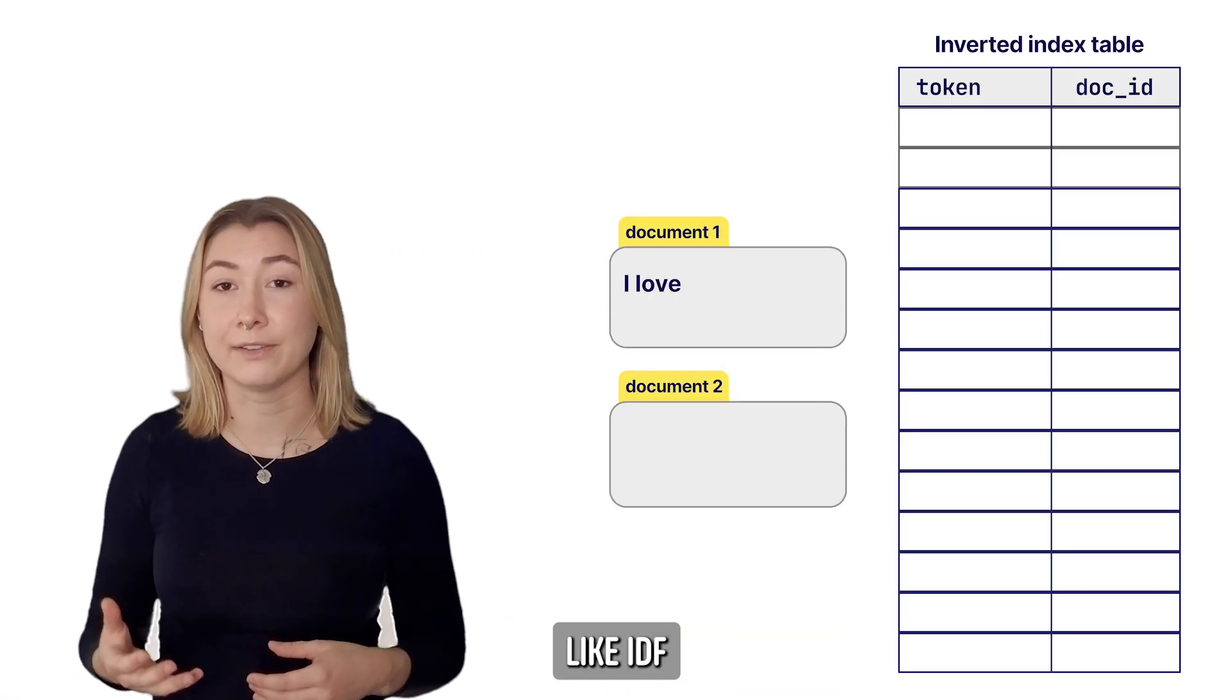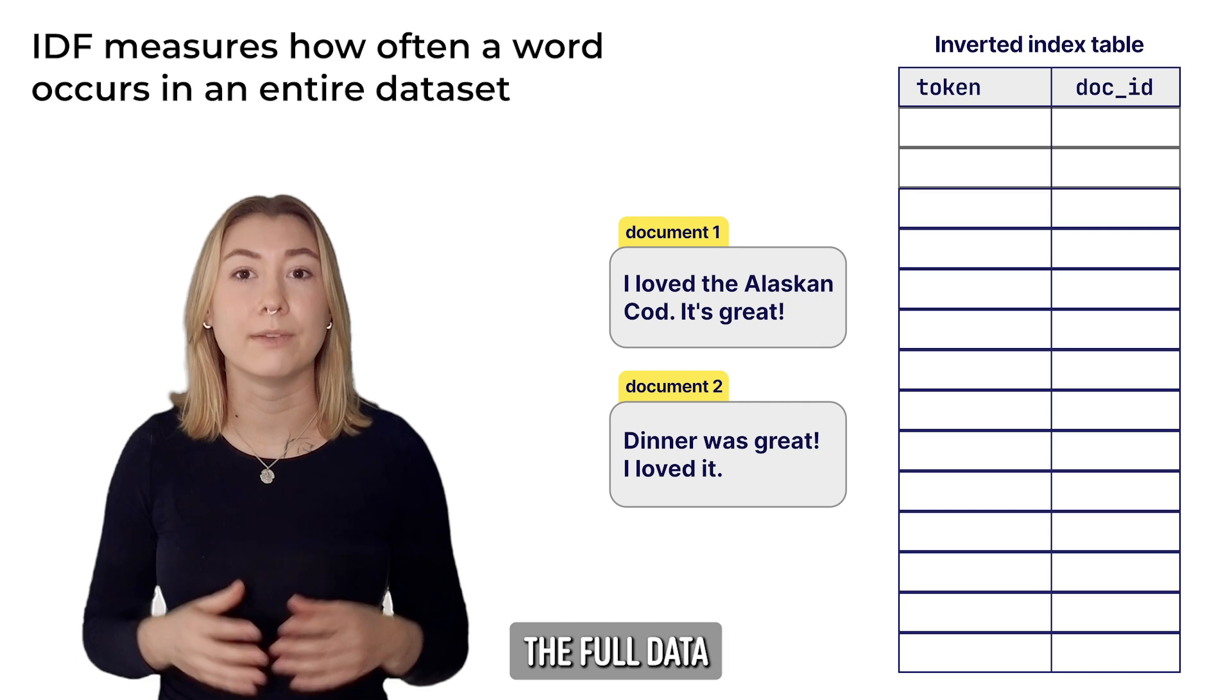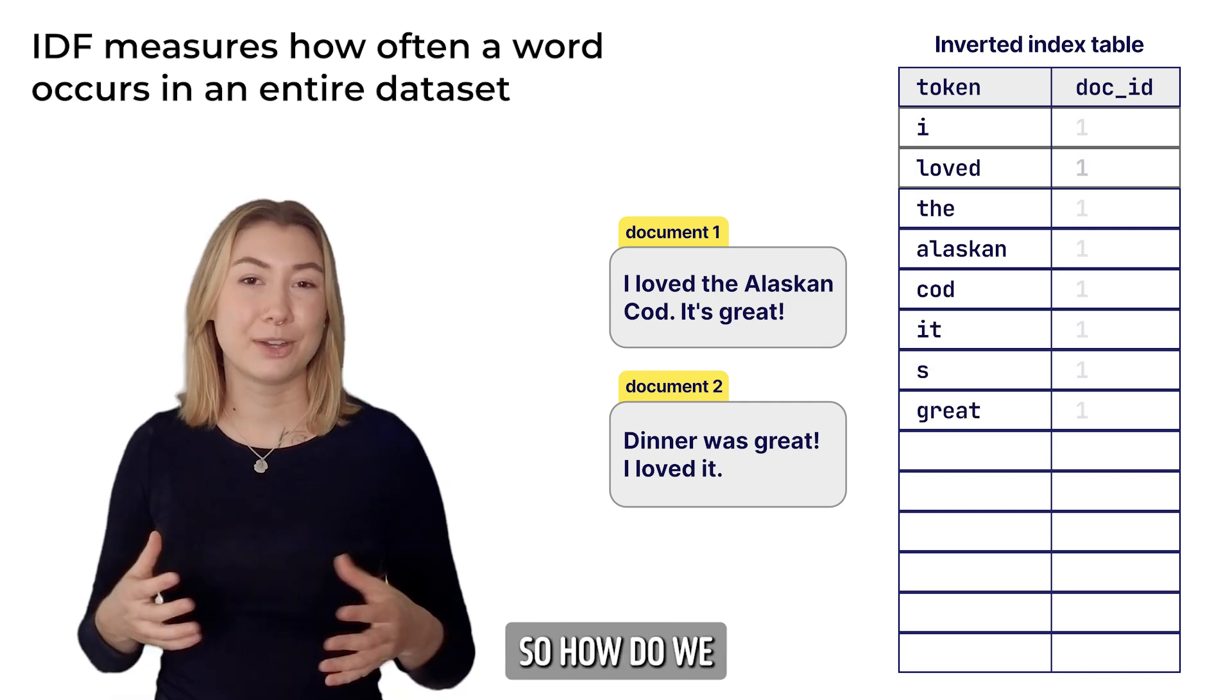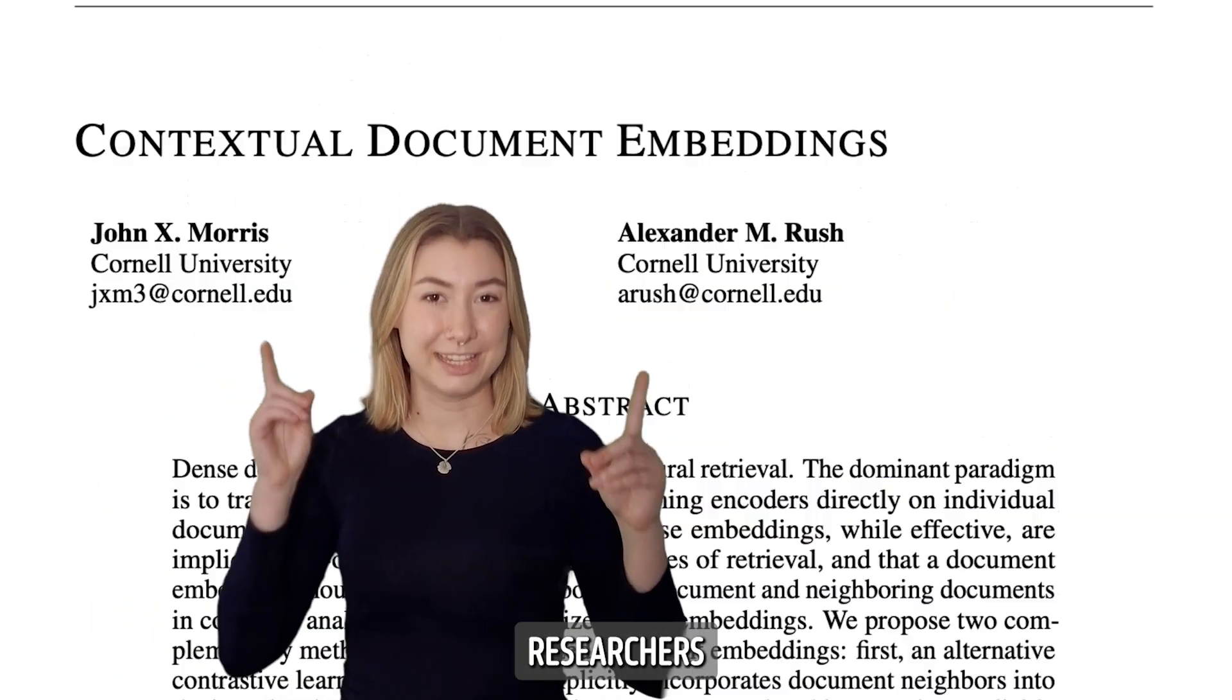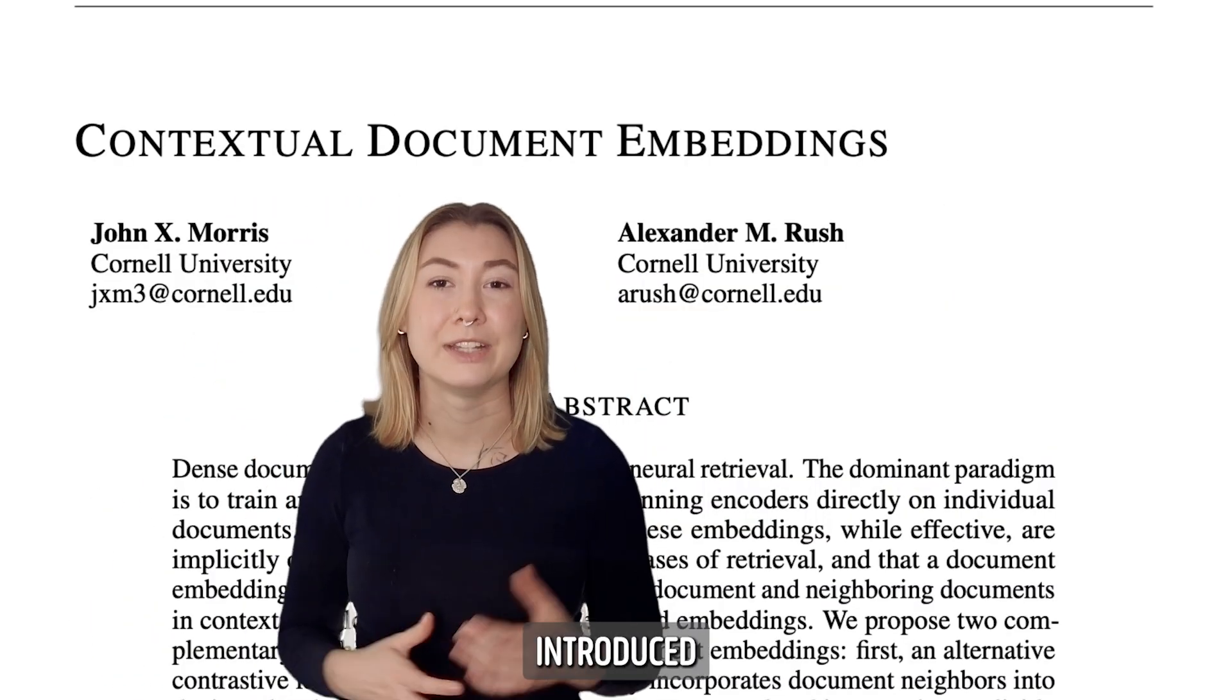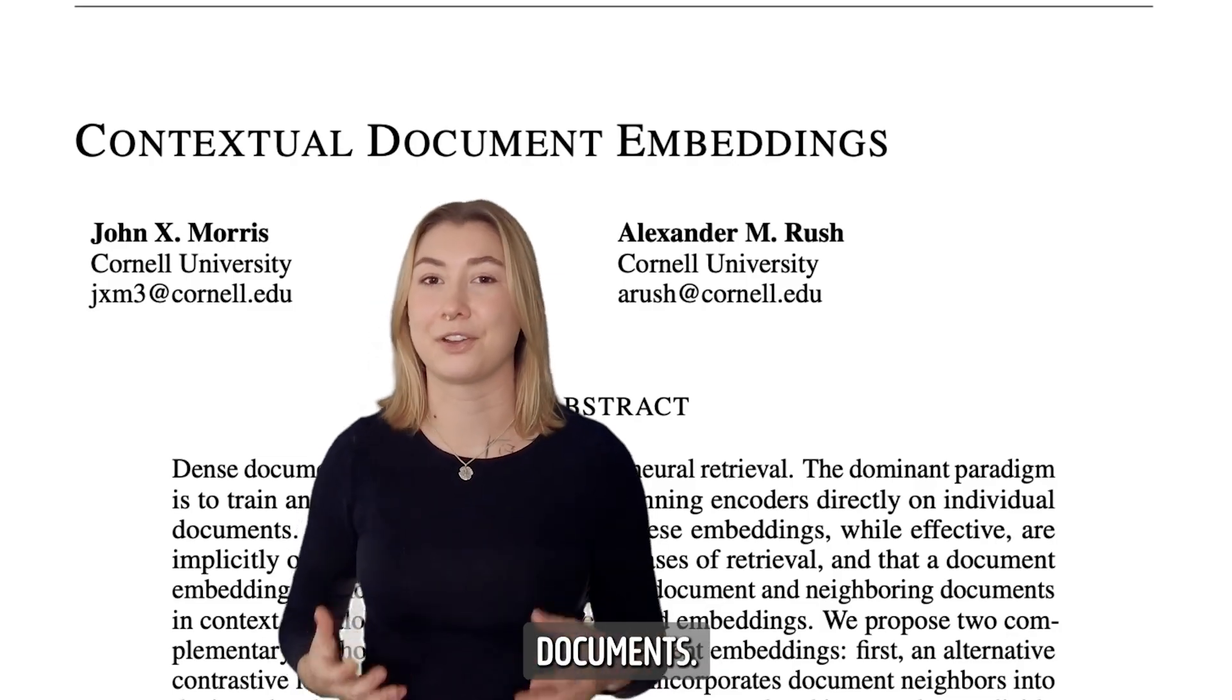Older methods like IDF or inverse document frequency for keyword search account for word frequency within the full dataset in their methodology. So how do we give embeddings from our individual document or chunk the context of the surrounding dataset? Researchers from Cornell University introduced a vector embedding method that is aware of its surrounding context in other documents.